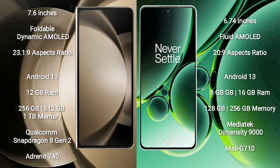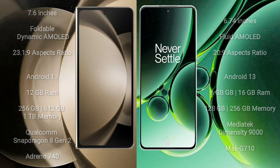OnePlus Nord 3 comes with 8GB or 16GB RAM and 128GB or 256GB internal storage, powered by a MediaTek Dimensity 9000 processor with Mali-G710 GPU.